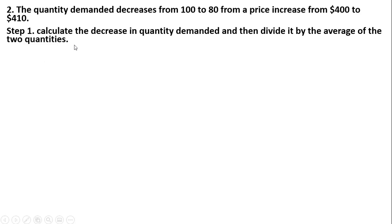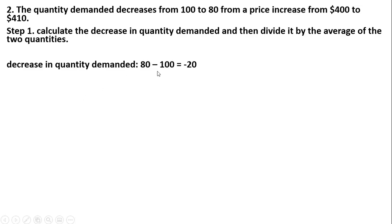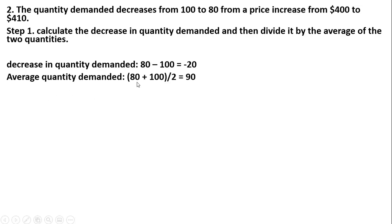Problem 2: the quantity demanded decreases from 100 to 80 from a price increase from $400 to $410. Following the steps, we calculate the decrease in quantity demanded and divide it by the average of the two quantities. Quantity demanded fell, so we get minus 20 (80 minus 100). The average quantity demanded is 100 plus 80 equals 180, divided by 2 is 90. So minus 20 divided by 90 is minus 0.22.